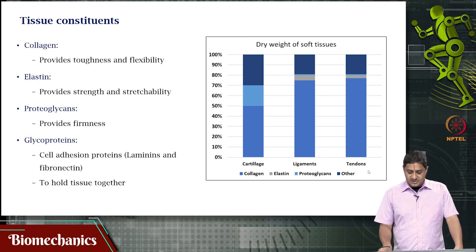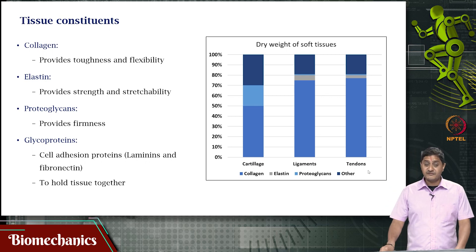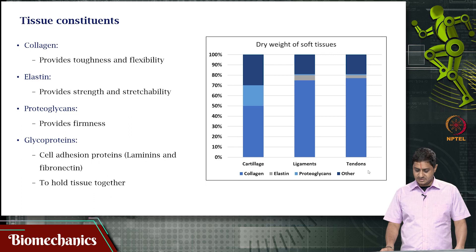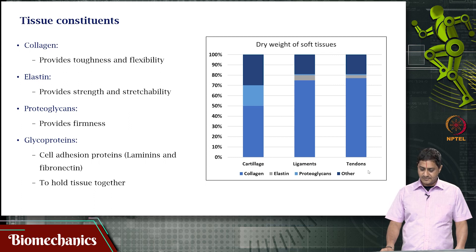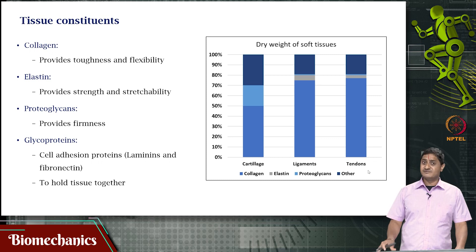Cartilage, for example, has about 50 percent collagen and about 20 percent proteoglycans. Ligaments have about 60 to 70 percent collagen and maybe even more. Tendons also have a comparable amount of collagen, but as we will see in future slides, although the amount of collagen is similar between ligaments and tendons, it is the structure that differentiates the function.